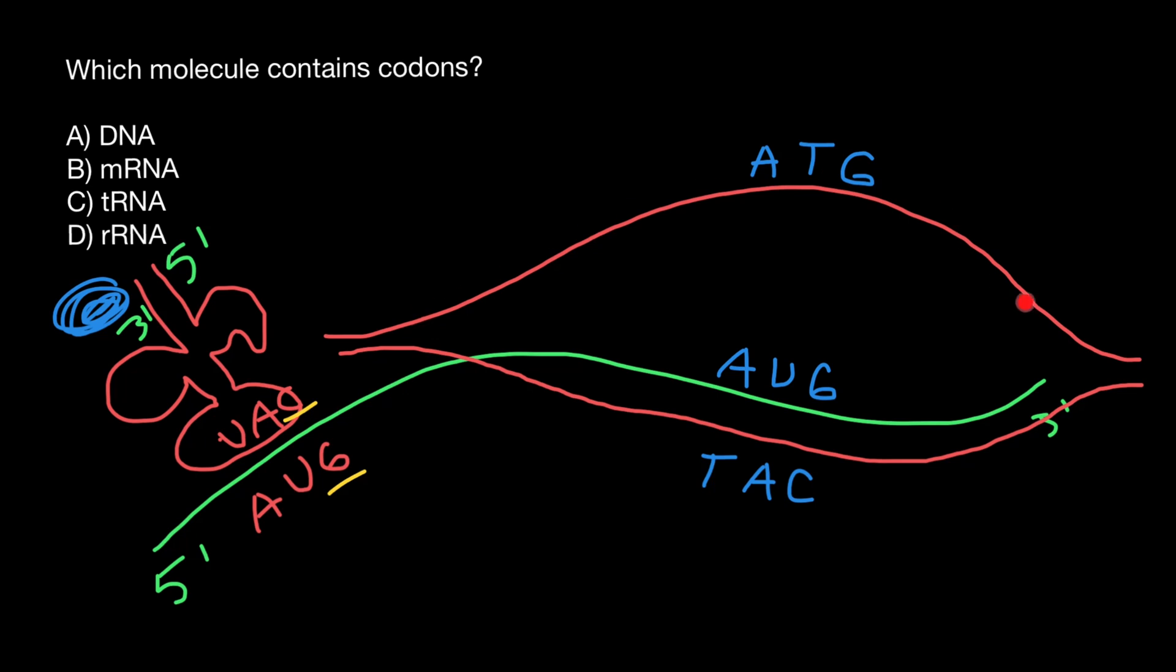Why? Because sequence of this strand is going to be the same as sequence of the messenger RNA. With one exception that in messenger RNA, thymine is substituted with uracil, which is just modified thymine.